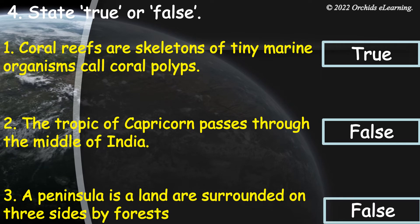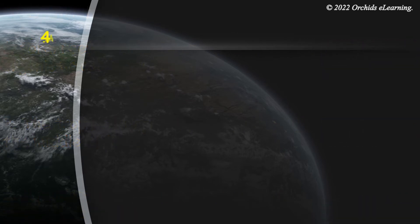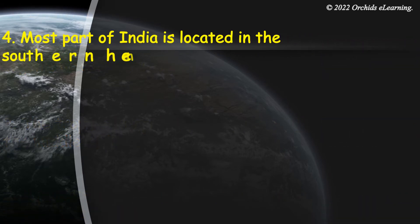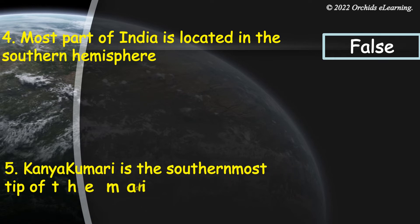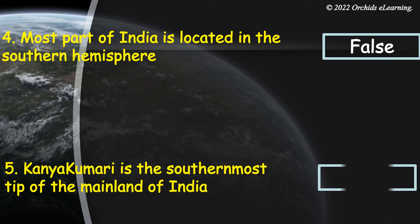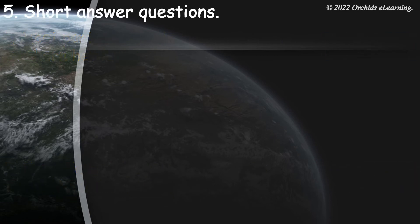Most part of India is located in the southern hemisphere — False. Kanyakumari is the southernmost tip of the mainland of India — True.